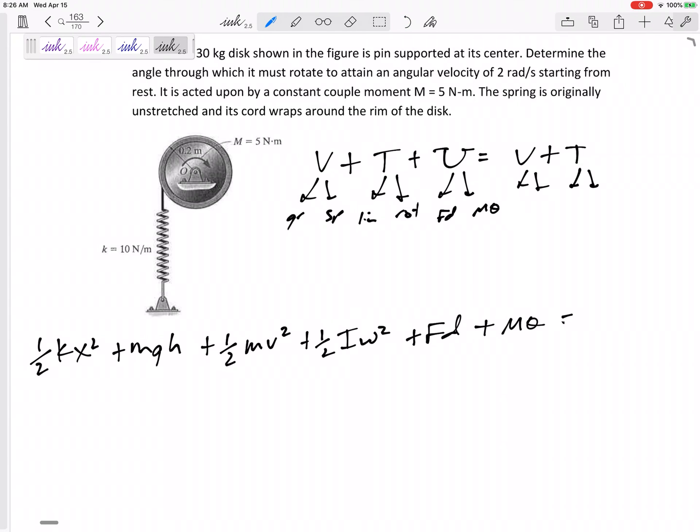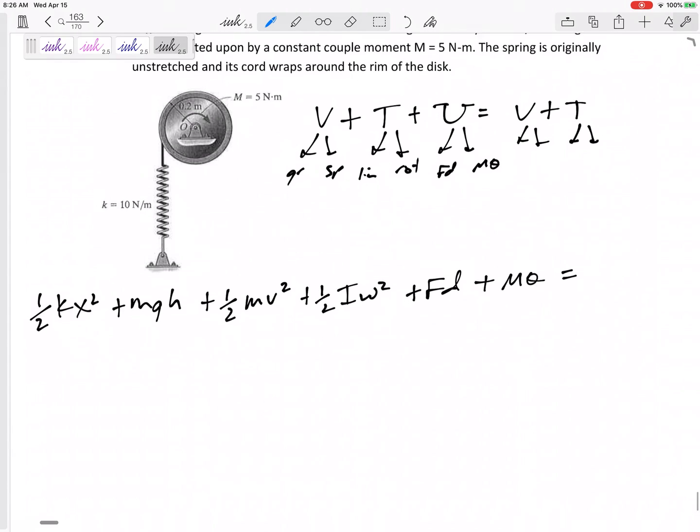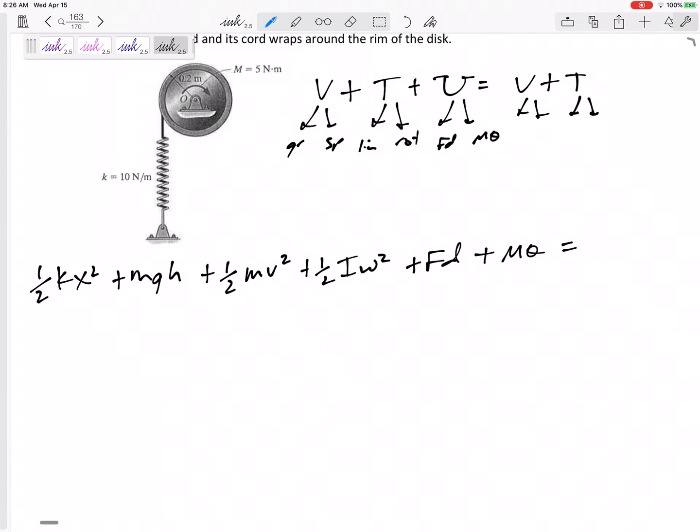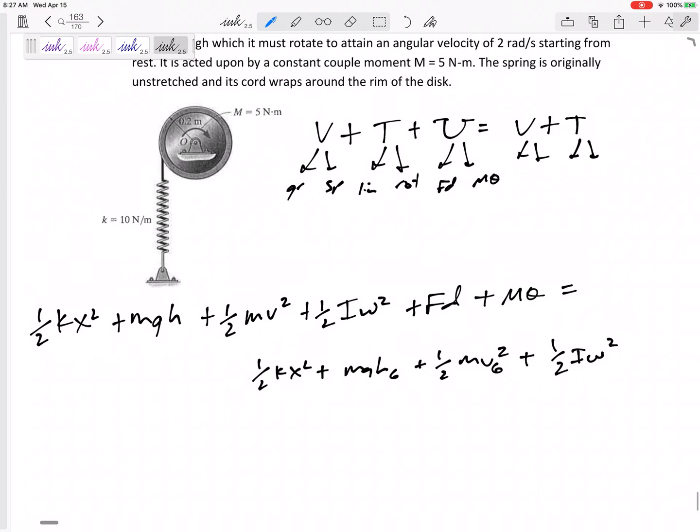Remember, it's not always fd. It's not always m theta. But if they're constant forces or constant moments, then yes, you can write fd and m theta. And then all of this energy at the final position. Now, you probably didn't want to write this whole thing. You probably know that a lot of these are going to be zero.